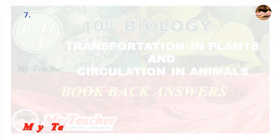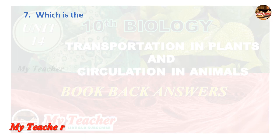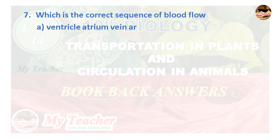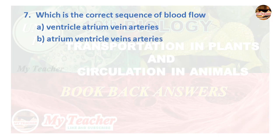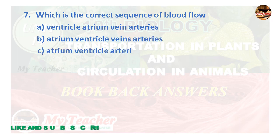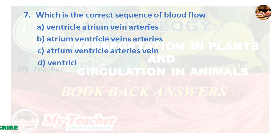Seventh question: Which is a correct sequence of blood flow? A. Ventricle, Atrium, Vein, Arteries; B. Atrium, Ventricle, Vein, Arteries; C. Atrium, Ventricle, Arteries, Vein; D. Ventricle, Vein, Atrium, Arteries. Answer is Option C: Atrium, Ventricle, Arteries, Vein.